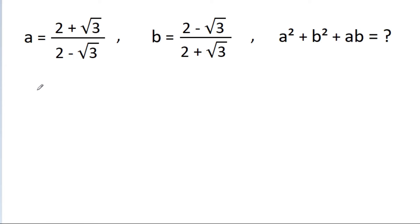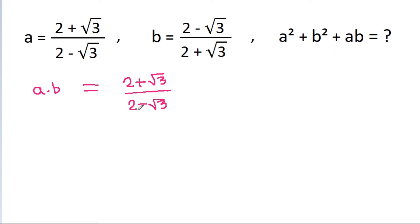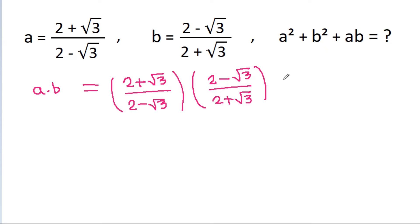If we multiply a and b, then it will be equal to (2 + root 3)/(2 - root 3) times (2 - root 3)/(2 + root 3). The (2 + root 3) and (2 - root 3) terms will get cancelled, and ab will be equal to 1.